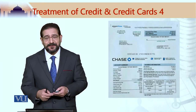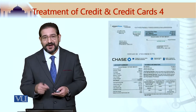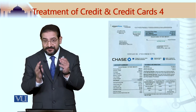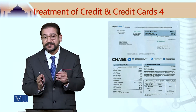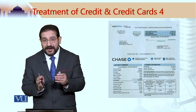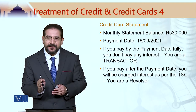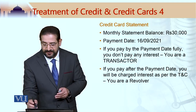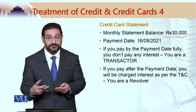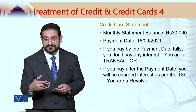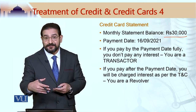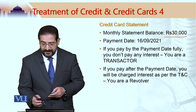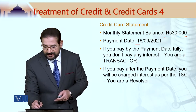You are not a happy man when you receive your monthly statement and you find that you have actually spent this much money during the past 30 days and you have to pay this money. On your monthly statement, you have a statement balance — for example, it could be 30,000 rupees — which you have spent at this boutique, at this restaurant, and so on. That statement would also give you a payment date.